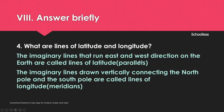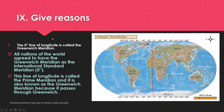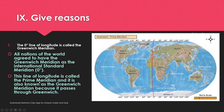The four hemispheres of Earth are: Northern Hemisphere, Southern Hemisphere, Eastern Hemisphere, and Western Hemisphere. The zero degree line of longitude is called the Greenwich Meridian because it passes through Greenwich, UK. All nations of the world agreed to have the Greenwich Meridian as the international standard reference — it is also called the Prime Meridian.